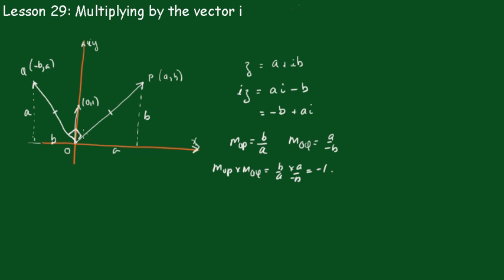So by multiplying by i, you preserve the length, but you rotate it through an anti-clockwise direction of 90 degrees, or pi upon two if you like, radians.